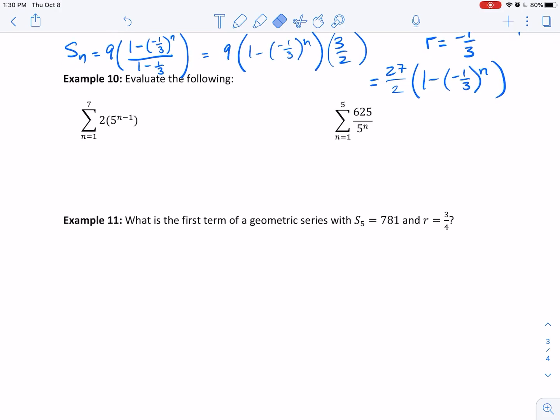Evaluate the following. This first one is a geometric series, and they're asking us to find the sum of seven terms. The first term, when I plug in 1, this is raised to the zero power, so my first term is just 2. My common ratio is 5. So this is S sub 7 equals a sub 1 times 1 minus r to the 7 over 1 minus r.